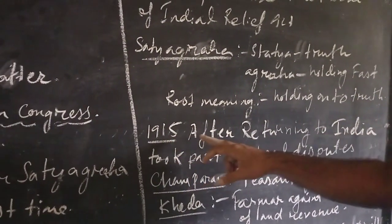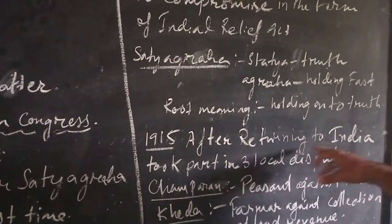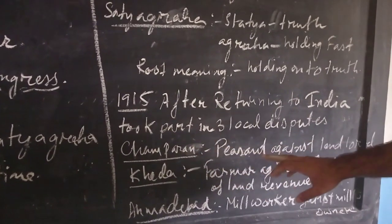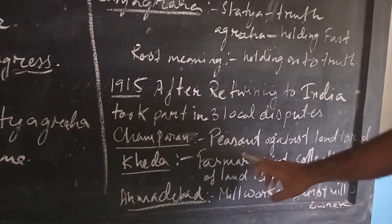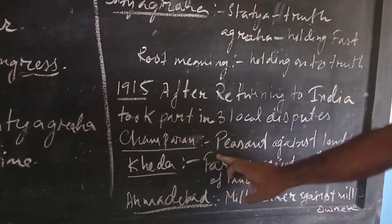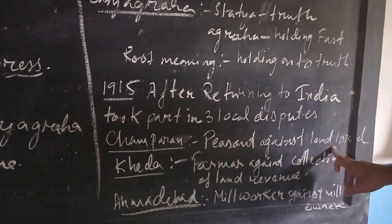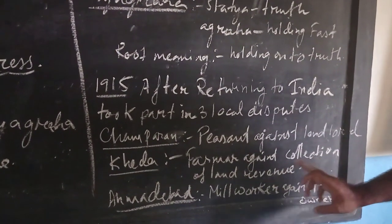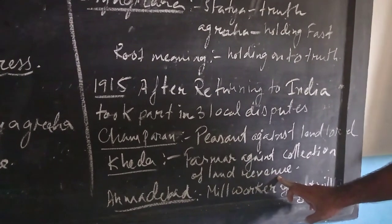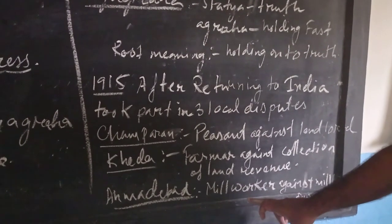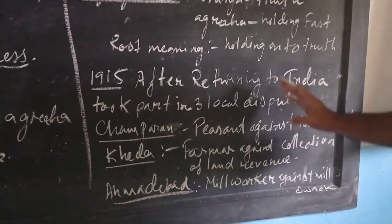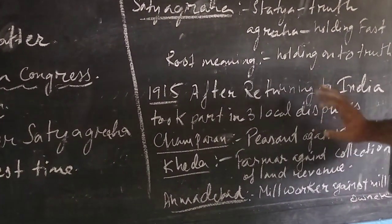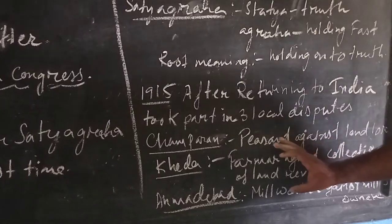In 1915, after returning to India, Gandhiji took part in three local disputes. First was Champaran — peasants against landlords. Second, he took part in the dispute of Kheda, where farmers opposed the collection of land revenue from mill owners. Third was in Ahmedabad — mill workers against mill owners. In all three disputes he applied the principle of non-violence and Satyagraha.